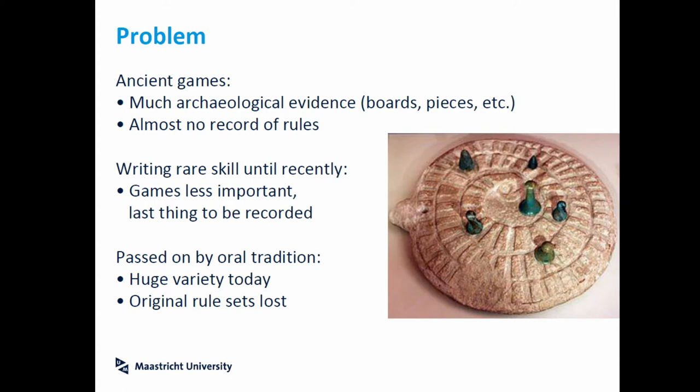That can be explained because by tradition, in a lot of cultures, the rules were transferred between generations only orally. So when we try to rebuild the rules of a game, we have to work only with the evidence we find. Consequently, for all the ancient games, we have a huge variety of possible rulesets, and maybe the original rulesets are lost.